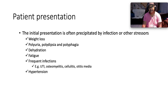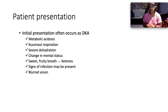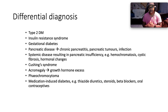The initial presentation of type 1 diabetes is often preceded by infection or other stresses. Patients present with weight loss, polyuria, polydipsia, polyphagia, dehydration, fatigue, and frequent infections such as urinary tract infections, osteomyelitis, cellulitis, and otitis media. Some present with hypertension. Others present in overt diabetic ketoacidosis — characterized by high glucose, ketonuria, metabolic acidosis on blood gas, Kussmaul respiration (deep sighing respiration to blow off acid), severe dehydration, changes in mental status, and sweet fruity breath from ketones.